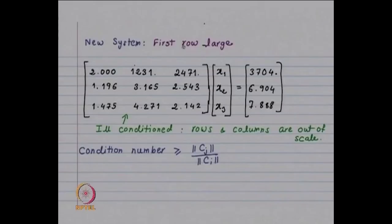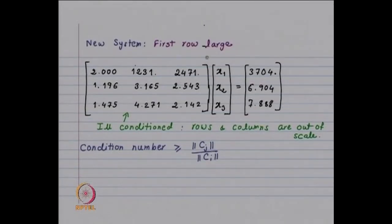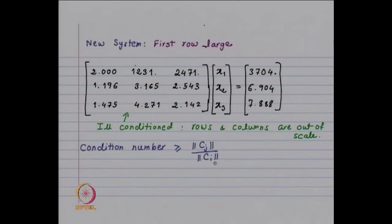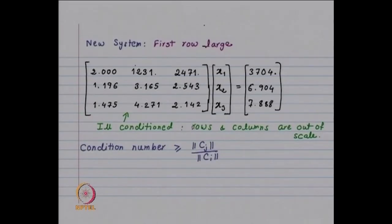Here we have the columns out of scale. We have seen that the condition number is greater than or equal to the norm of column j divided by the norm of column i, and what is said about columns is also true for rows. So this system is ill-conditioned, and that was the problem. Now let us look at the error analysis.